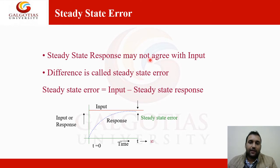Next important point is the steady state errors. The steady state response may not agree with input. The difference is called steady state error. The steady state error is equal to input minus steady state response. This is input or response versus time. Here you can see this is graph for response, but output is here. This is called the steady state error. This is the difference between response and input steady state response, which is steady state error.